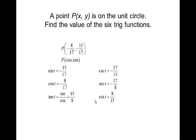I'll say it again because this is kind of a big point. When you have the intersection point between the terminal side of an angle and the unit circle, that coordinate where they intersect is in the form of cosine, sine.